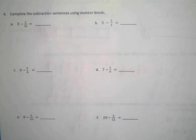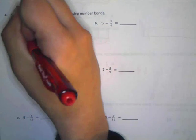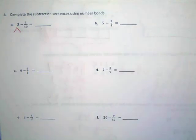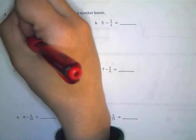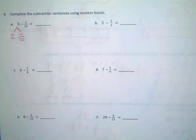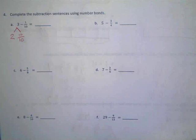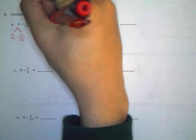All right, for number four, all it wants you to do is complete the subtraction sentences using number bonds. So, just like what we were doing, but not having to do the number line. So, for example, for this one, how can I break this up into things that are easy to subtract from? Devin? Two and ten tenths. Yep. How do you know to use tenths? Because the number you're subtracting is tenths. Yep. So, ten tenths take away one tenth is what? Nine tenths. Nine tenths.